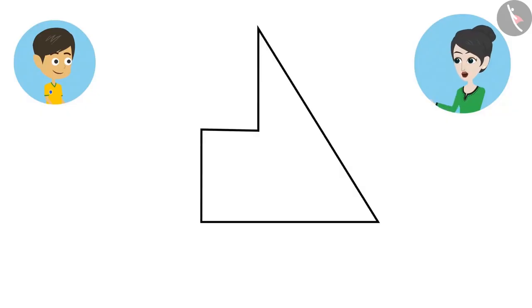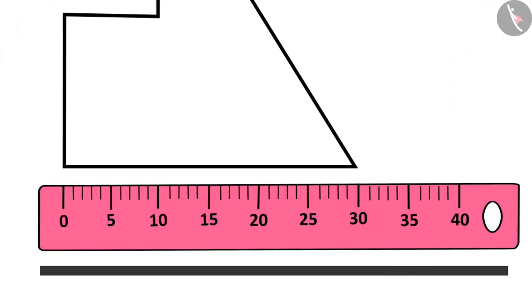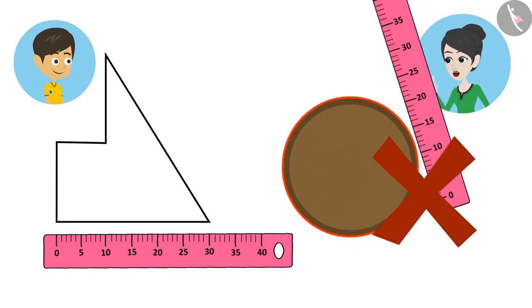The edges of shapes with straight lines can be measured with a scale because the scale is also straight. But you cannot measure a shape which has a curved boundary with a scale.